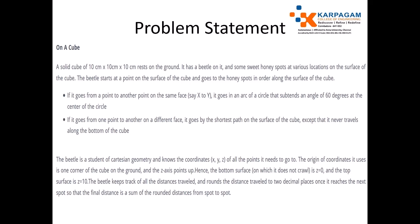A solid cube of 10 centimeter by 10 centimeter by 10 centimeter rests on the ground. It has a beetle on it and some sweet honey spots at various locations on the surface of the cube. The beetle starts at a point on the surface of the cube and goes to the honey spots in order along the surface.